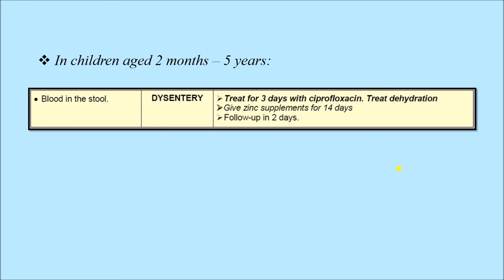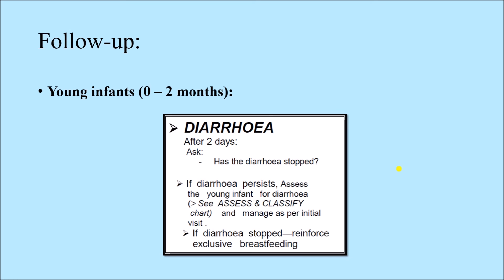This covers management for no dehydration, some dehydration, severe dehydration, persistent diarrhea, and dysentery. Regarding follow-up: for young infants aged 0 to 2 months with diarrhea, the mother returns after two days. We ask if the diarrhea has stopped. If it persists, we reassess and reclassify. If it has stopped, we reinforce exclusive breastfeeding.